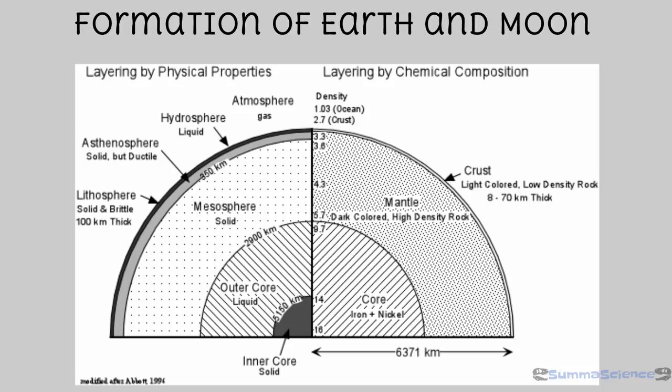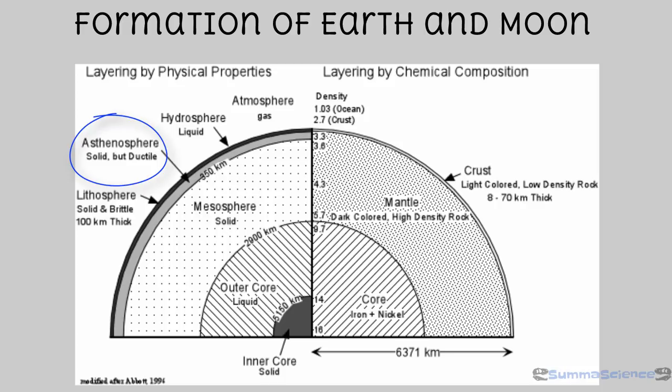Let's take a closer look at the diagram from the previous slide. Scientists have organized the earth's layers based upon two principles: what it is made out of, and how it behaves. The important physical layers include the lithosphere, which is the earth's crust and uppermost mantle, and the asthenosphere, which is the outer mantle responsible for plate tectonics. The hard and brittle lithosphere essentially rides atop the softer, more easily deformed asthenosphere.